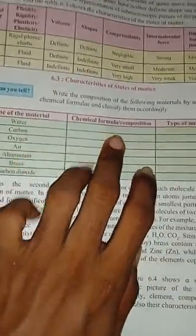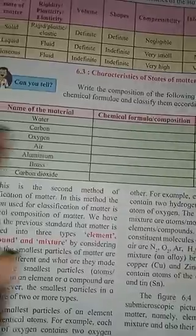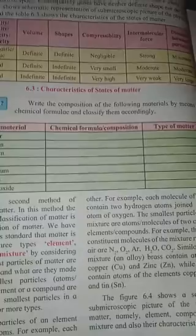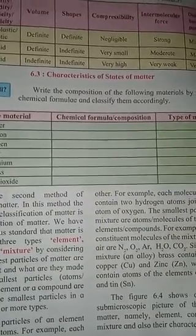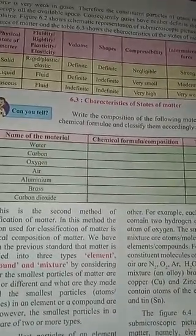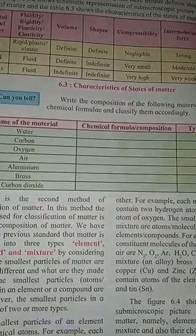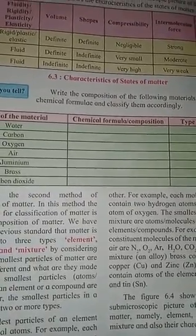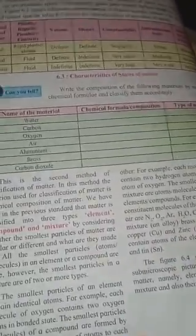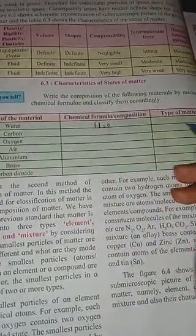Now we look at a table giving the name of material, chemical formula, and type of matter. For example, water: chemical formula H₂O, type of matter is compound. So water is a compound with formula H₂O.